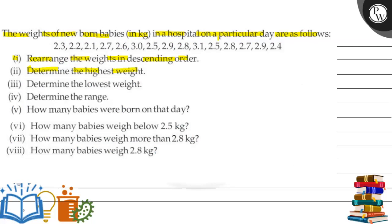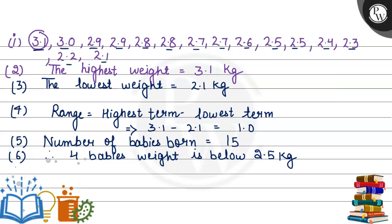Next: how many babies weigh more than 2.8 kg? More than 2.8 kg, that will be 2.9, 2.9, 3.0, and 3.1. Therefore, four babies weigh more than 2.8 kg.